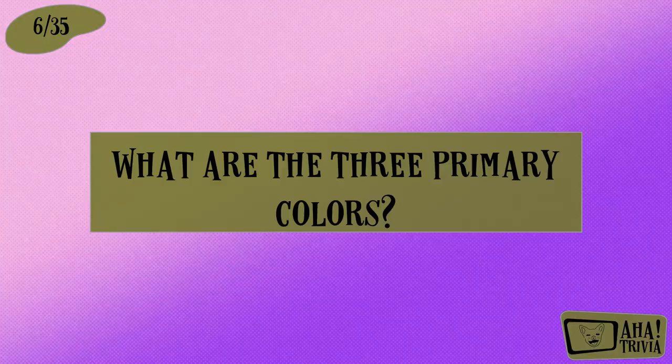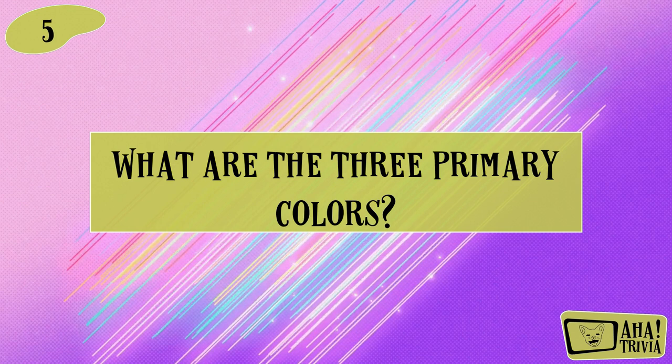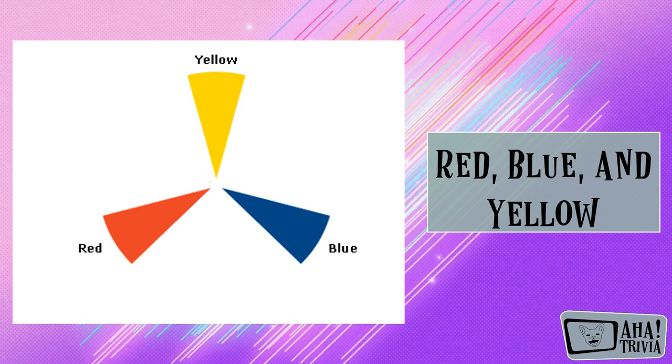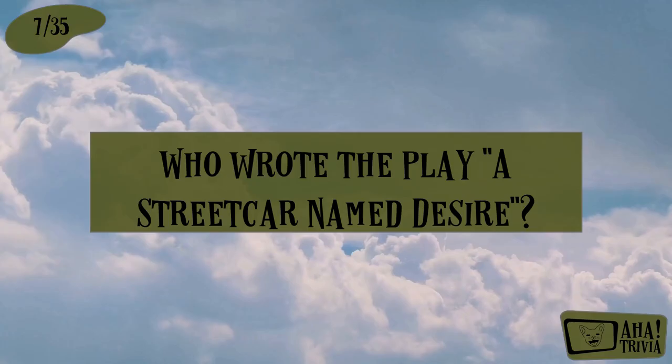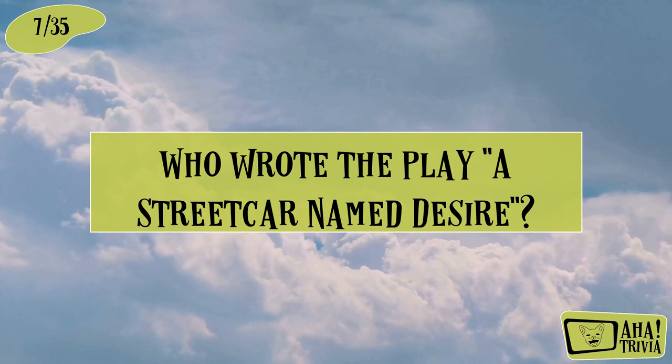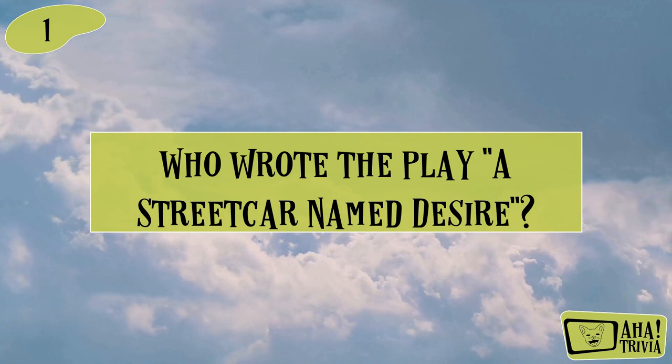What are the three primary colors? Red, blue, and yellow. Who wrote the play A Streetcar Named Desire? Tennessee Williams.